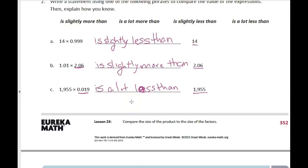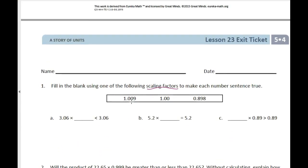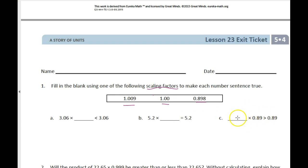Let's look back at the exit ticket. You're given three choices to put into the blanks. Three and six hundredths — which one would you multiply by to make it less than three and six hundredths? One choice will equal it, one will make it bigger. For eighty-nine hundredths: what must you multiply by to get bigger than what you started with? Do all three sections — A, B, and C — and see you tomorrow.